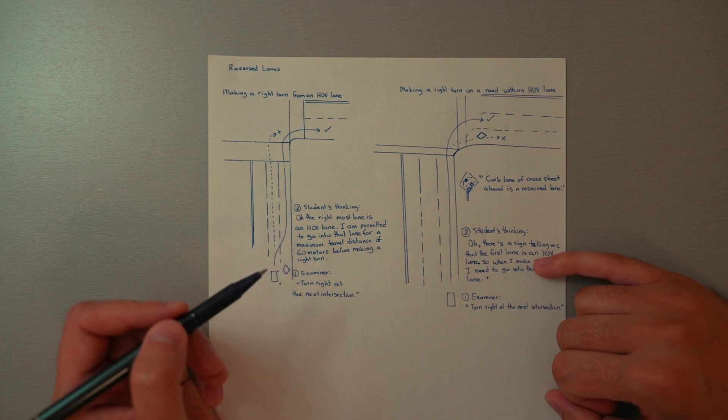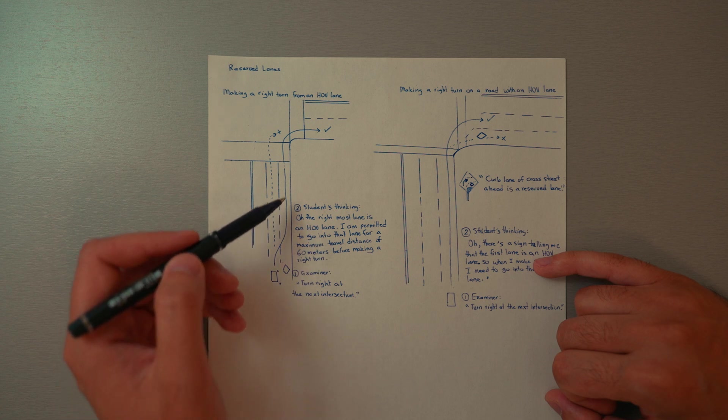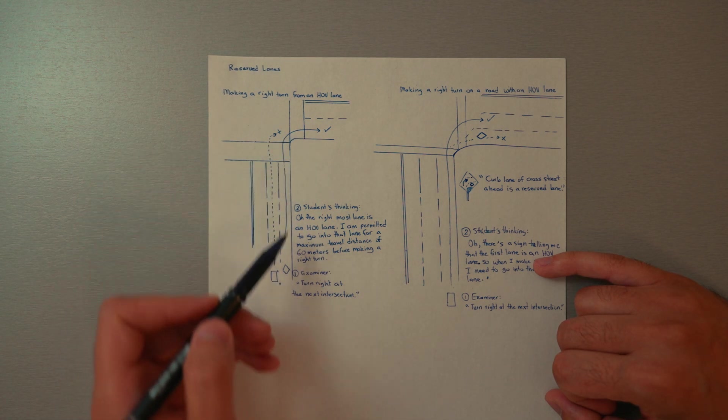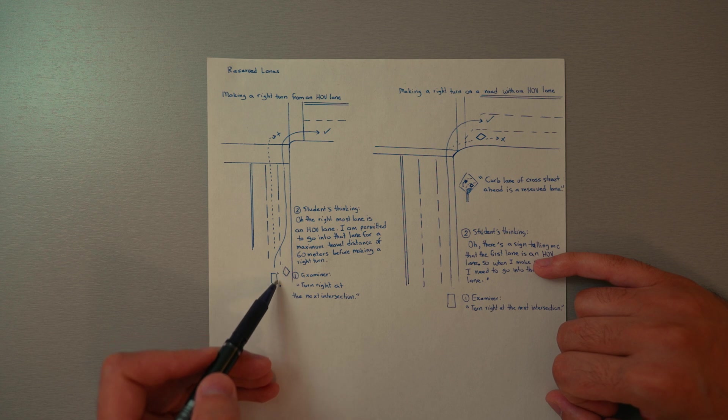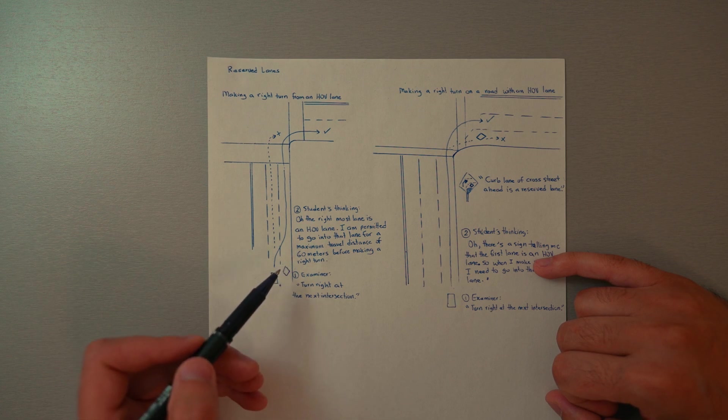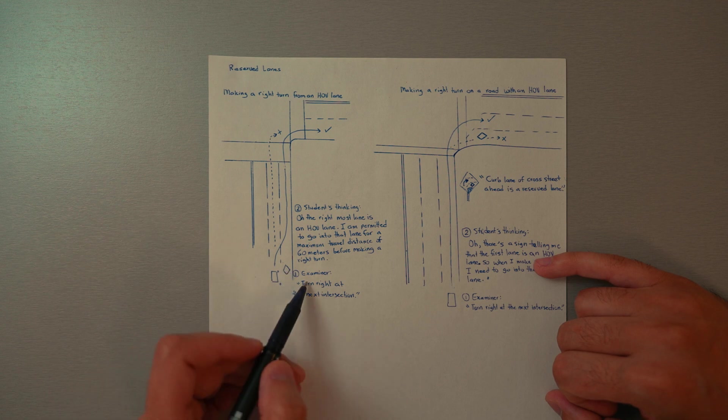From the curb lane. Now this curb lane is an HOV lane. That's fine, we can go into it. So when the examiner says turn right at the next intersection and you're dealing with an HOV lane, you can generally enter into this HOV lane about half a block before your turn.